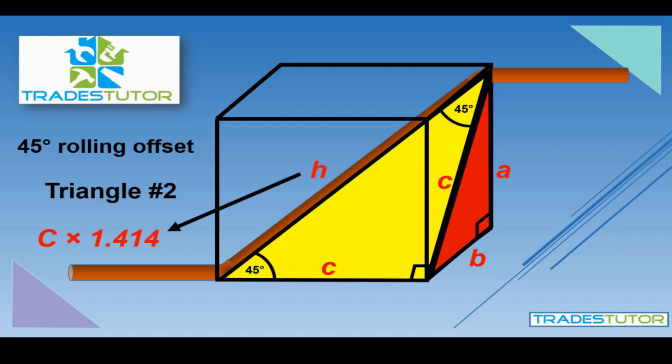So basically it's 0.414 times bigger than C, and there you have it — two triangles to get your 45-degree rolling offset. Thanks for watching, and I'm going to make another video shortly that goes through an example so we can work through it together. Take care.